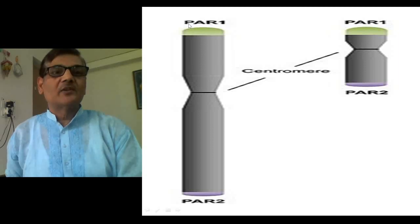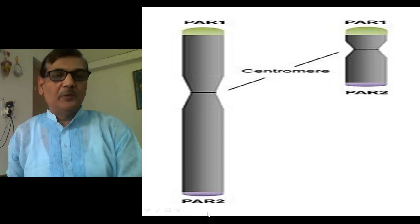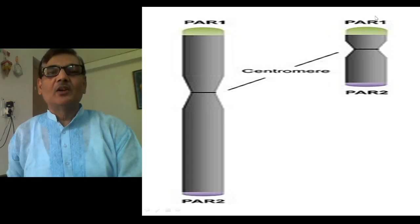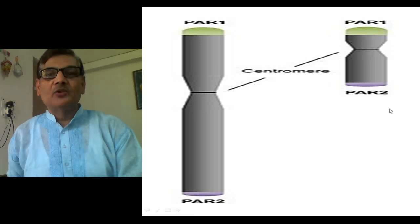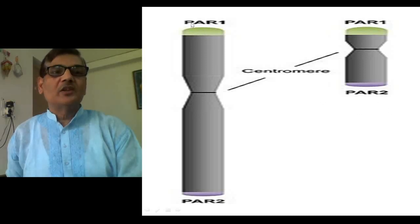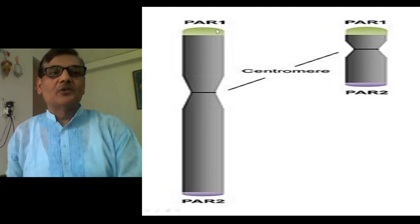Such regions are referred to as PAR1 and PAR2 in the X chromosome, and exactly the same way they are referred to as PAR1 and PAR2 in the Y chromosome. These regions are called pseudo-autosomal regions — PAR stands for pseudo-autosomal region.